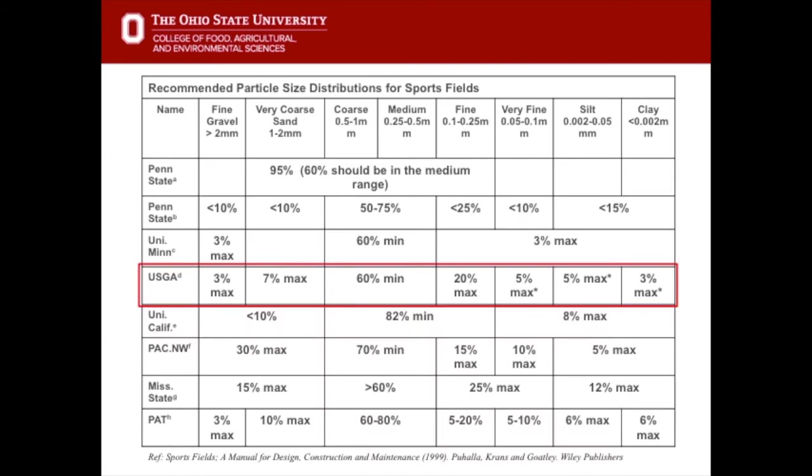This table is quite complex, but the fourth entry — the United States Golf Association recommendation, highlighted in red — is one very commonly used not just by golf courses but also by high-end and professional fields around the world. There has to be a minimum of medium coarse sand in that root zone mix in order for it to drain.